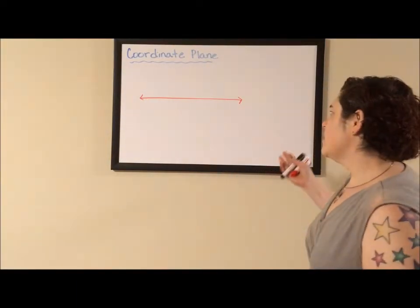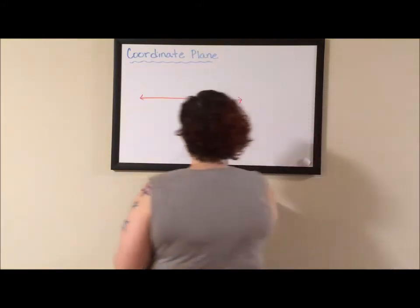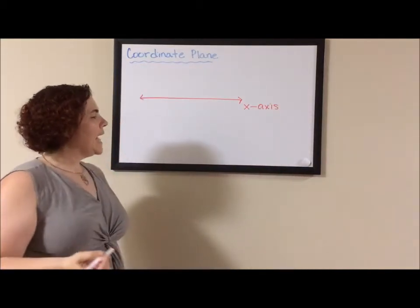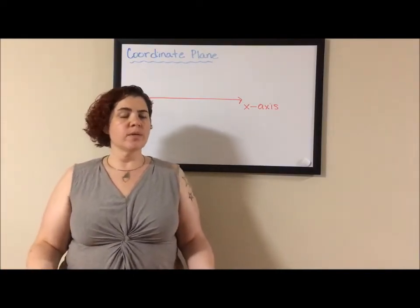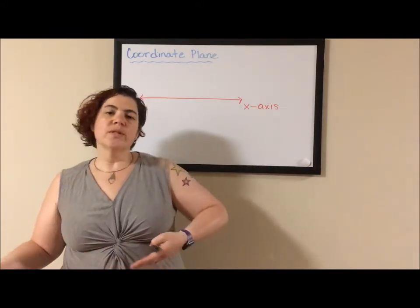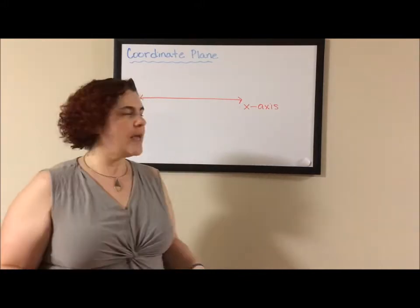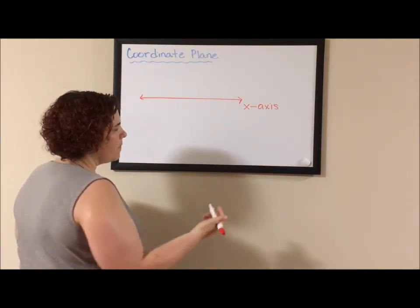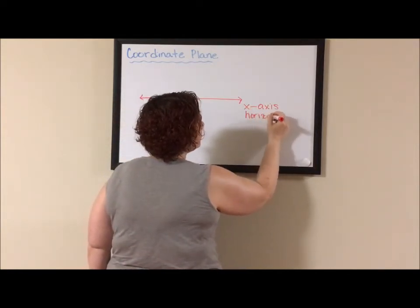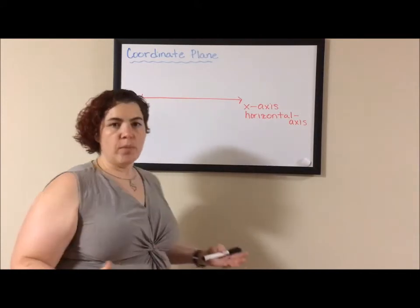We are going to start with this simple horizontal number line. Normally we call this number line the x-axis. The problem with calling it the x-axis is what if we're not using the variables x and y? What if we're talking about the cost of taking a taxi ride? Our variables then will be c and m, cost and number of miles you take the cab. So x and y are really limiting. So one way to get around this is to call this the horizontal axis. And when we call it the horizontal axis, that opens it up for any variable we want to use.